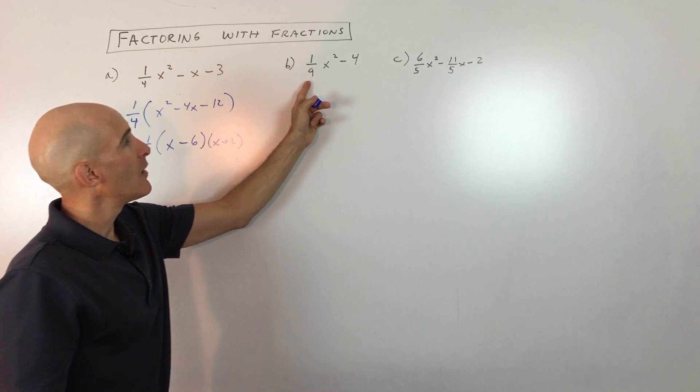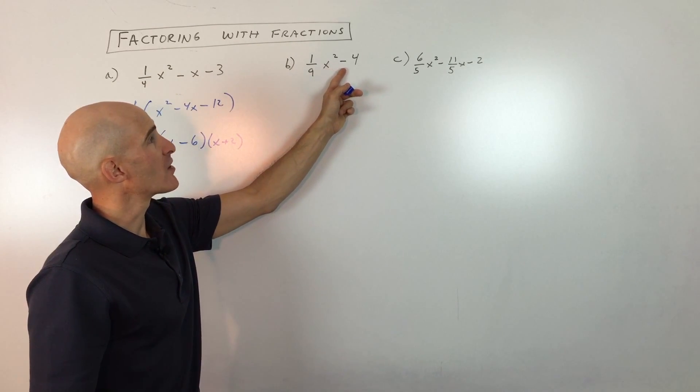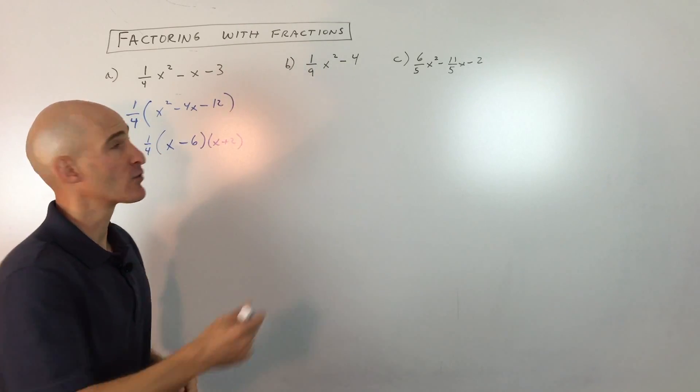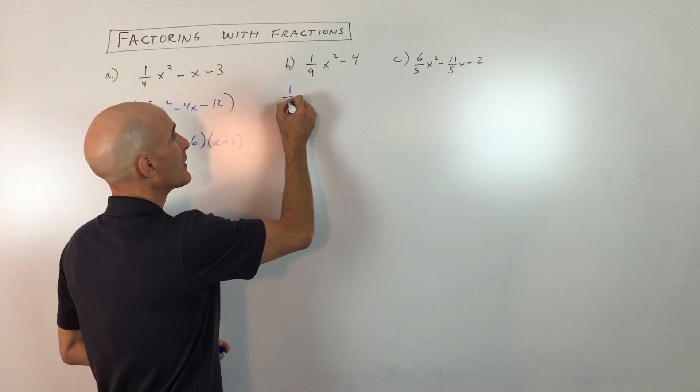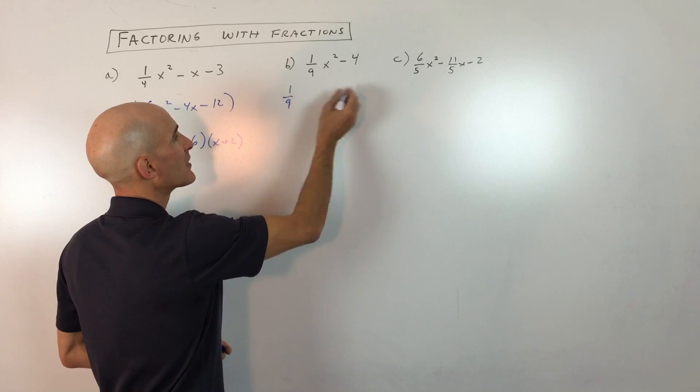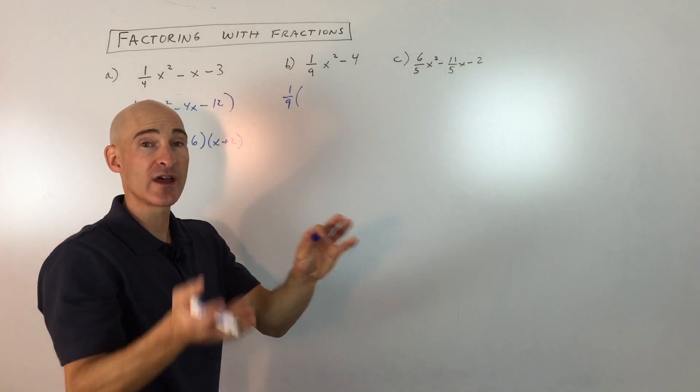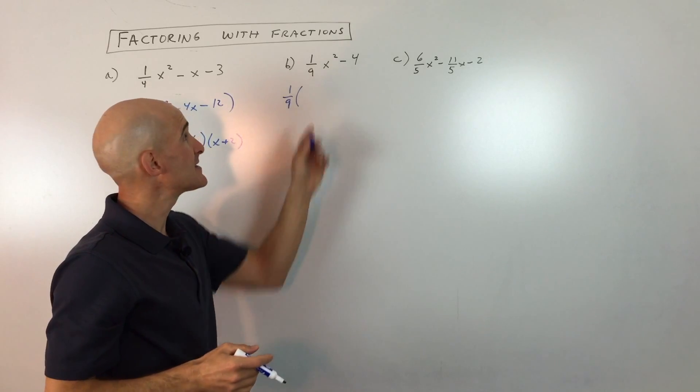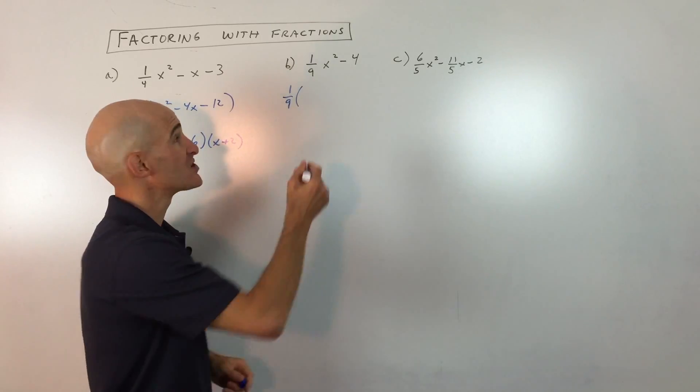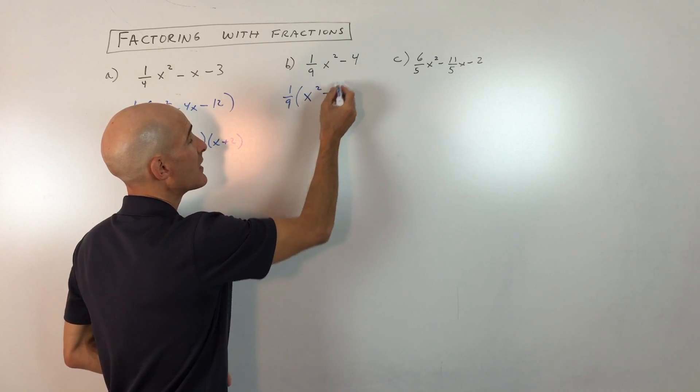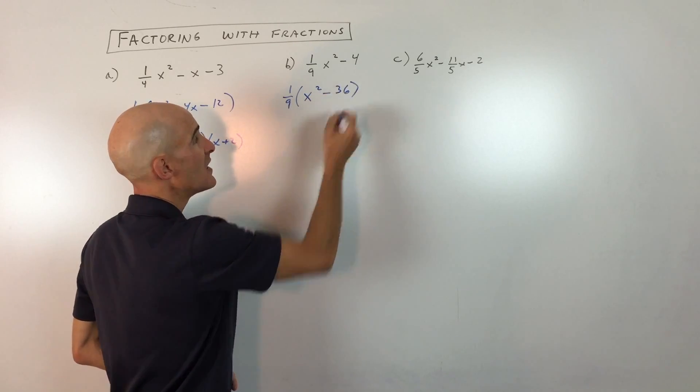Let's go to the next example, one-ninth times x squared minus four. So what we're going to do is we're going to factor out the one-ninth to get rid of that fraction. Letter C is a little bit more challenging, so I'll get into that one next. But let's factor out the one-ninth. Again, when you factor out one-ninth, it's really like multiplying by what's inside the parentheses by the reciprocal, which is nine. So nine times one-ninth, of course, is one. That's x squared. And then nine times four is 36.